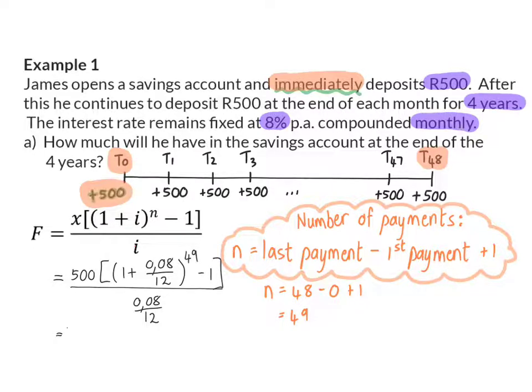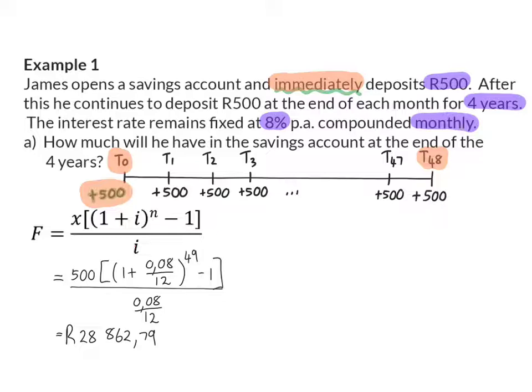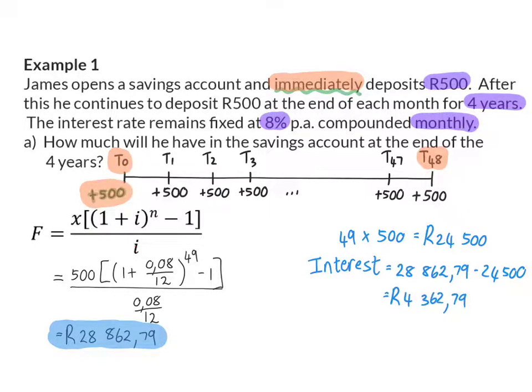And in the denominator, we again have our interest rate of 8%, that is compounded monthly. When you determine this on your calculator, you will see that he will have R28,862.79 in his account. And this is a very good example of why it is important to plan ahead. Because even though James made 49 payments of R500, meaning that he deposited R24,500 into the account, at the end of the four years, he had R28,862 in that account. This means that he received an interest of R4,362.79.